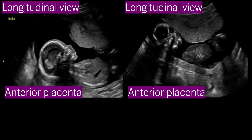Here in this image, this is the intrauterine fetus, this is the fetal head, and this is the fetal body. In front of this fetus, there is a hyperechoic structure. Similarly, in this image, these are the fetal parts and in front of this fetus there is a hyperechoic structure. The placenta is normally hyperechoic. If we see a hyperechoic homogenous structure in front of the fetal parts — in the upper part of the screen — then this is the anterior placenta.